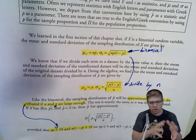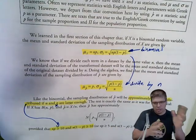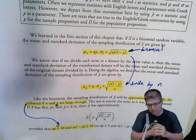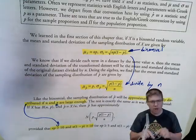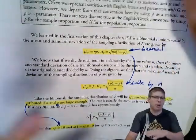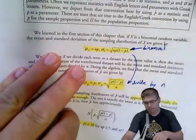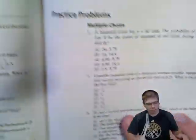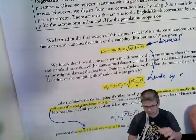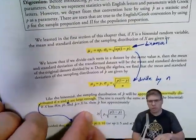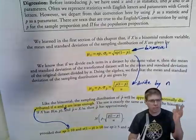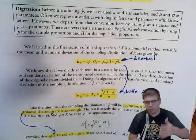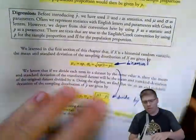Technically, a binomial distribution is discrete — fixed number of trials, integer number of successes. But when there are enough bars, the shape becomes approximately normal, which is a continuous distribution. Once you have that normal shape, you can do normal CDF calculations to find probabilities. This is really just the foundation for inference, which is the next chapter.